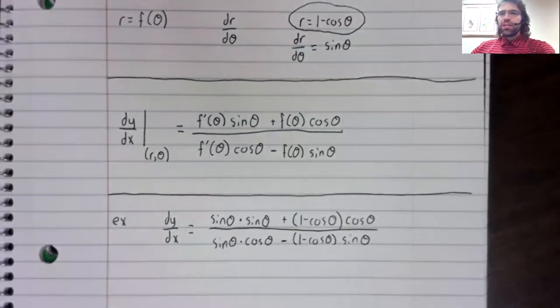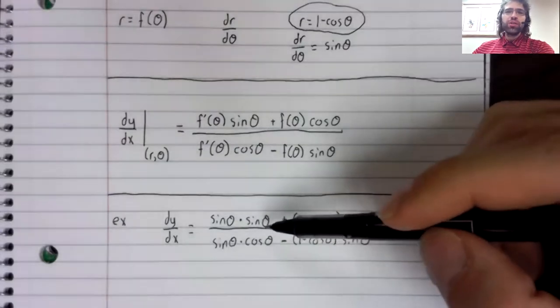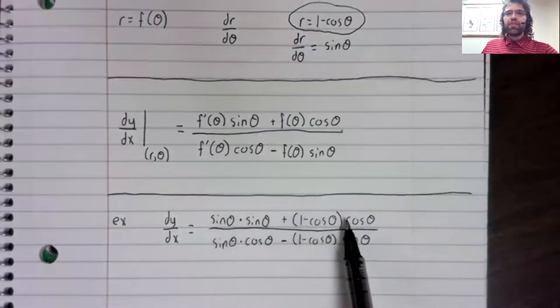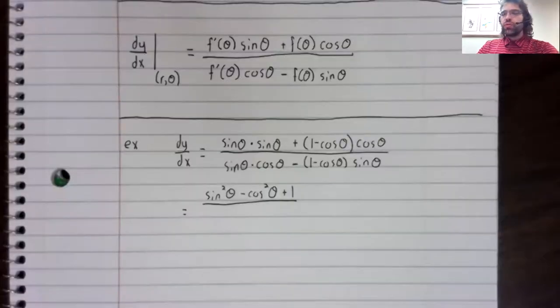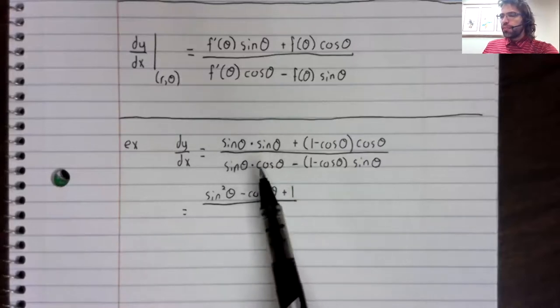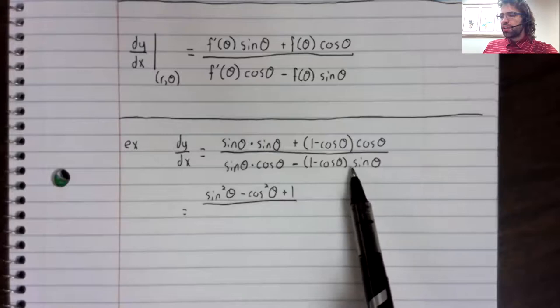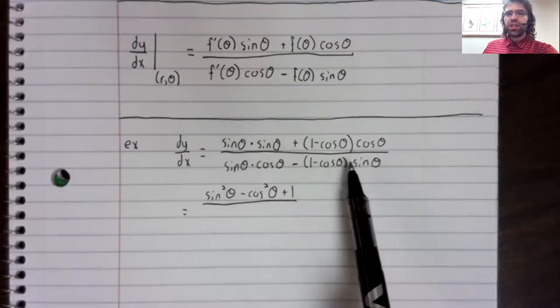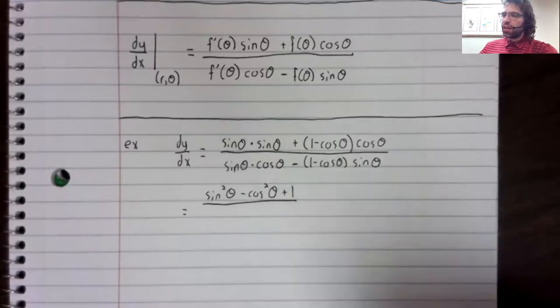And I suppose you could simplify the numerator a little. This is sine squared, and here we have cosine squared. And you can simplify the denominator a little. We have a sine times a cosine, and this is negative, negative, giving us a positive sine cosine.